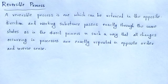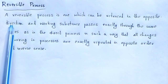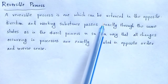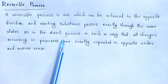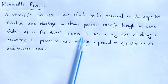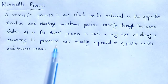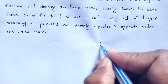What is the reversible thermodynamic process, and what are irreversible thermodynamic processes? That we have to discuss. Reversible — the name indicates reversible. A reversible process is one which can be retraced in opposite direction, and the working substance passes exactly through the same states as in the direct process, in such a way that all changes occurring in the process are exactly repeated in opposite order and inverse sense. If we draw a graph between pressure and volume,